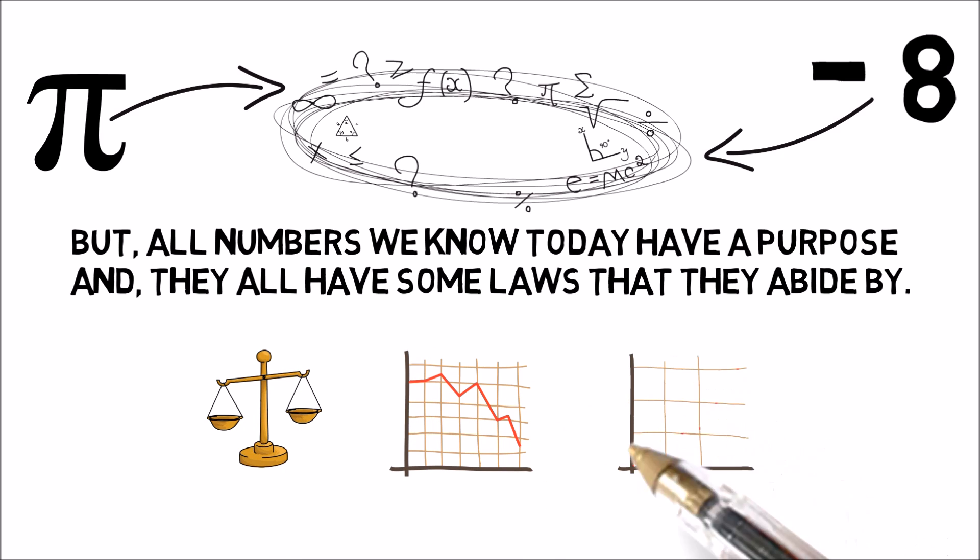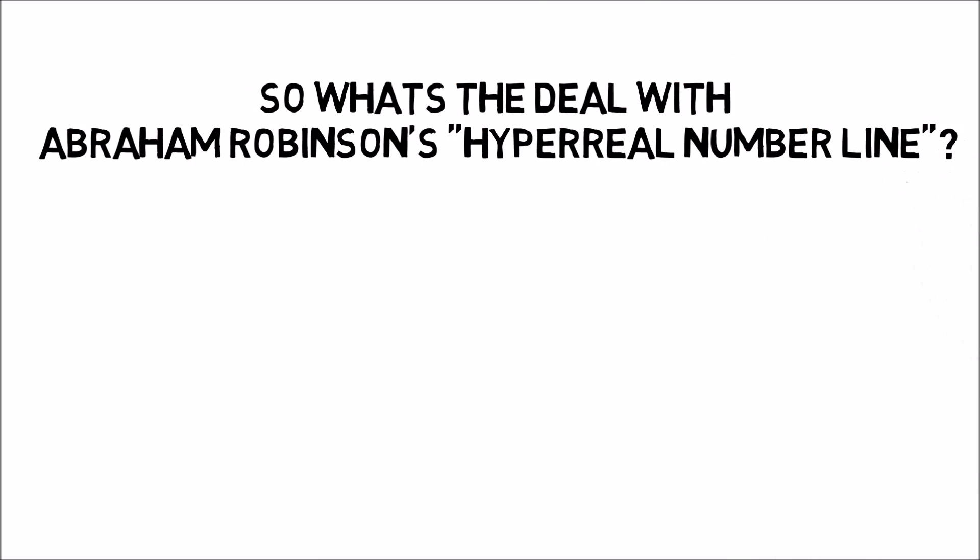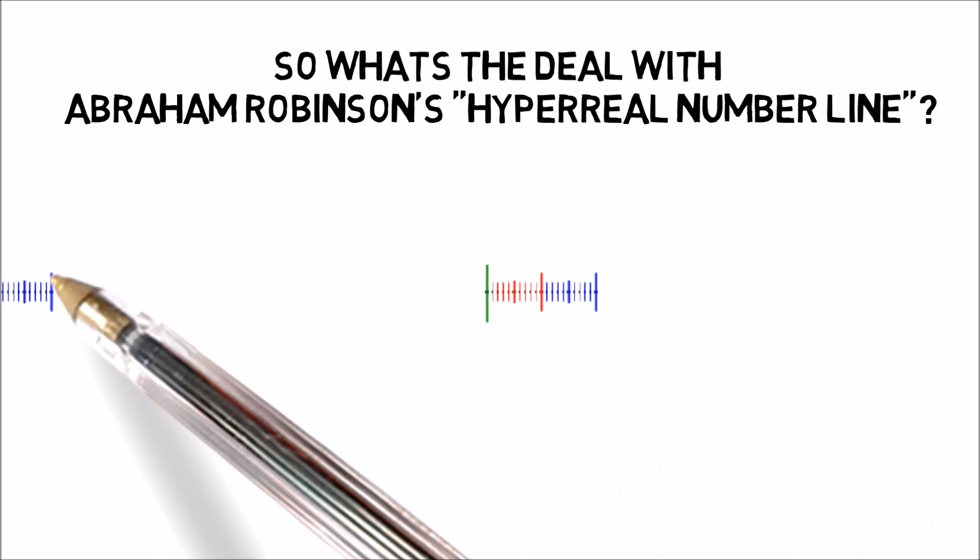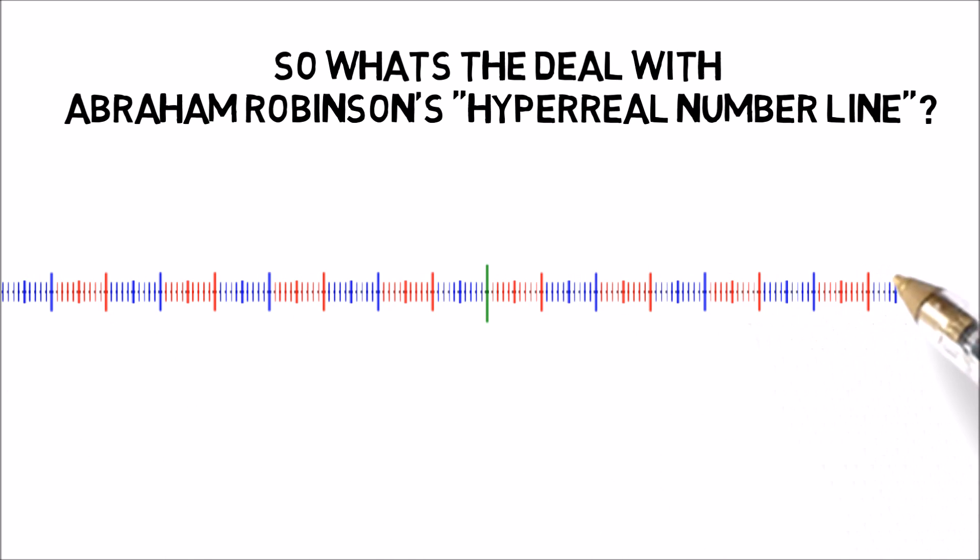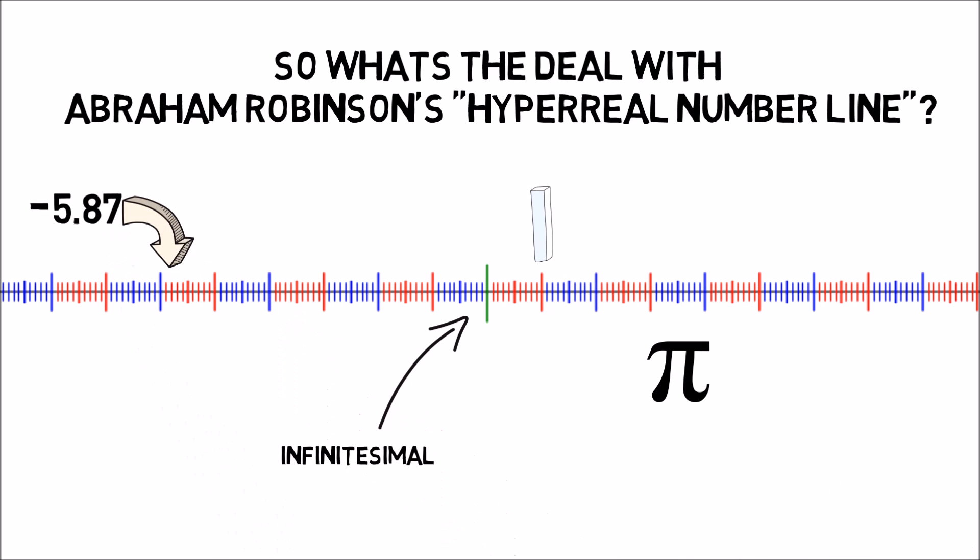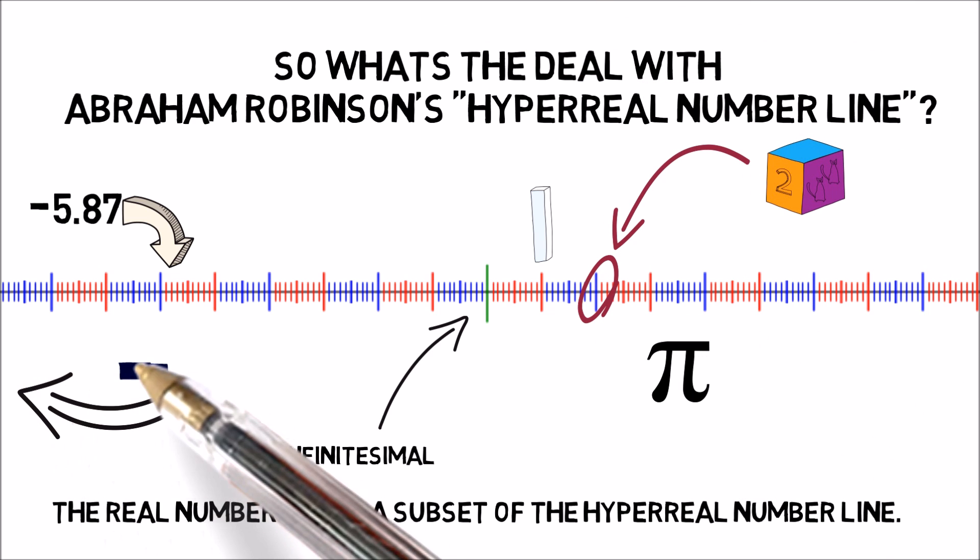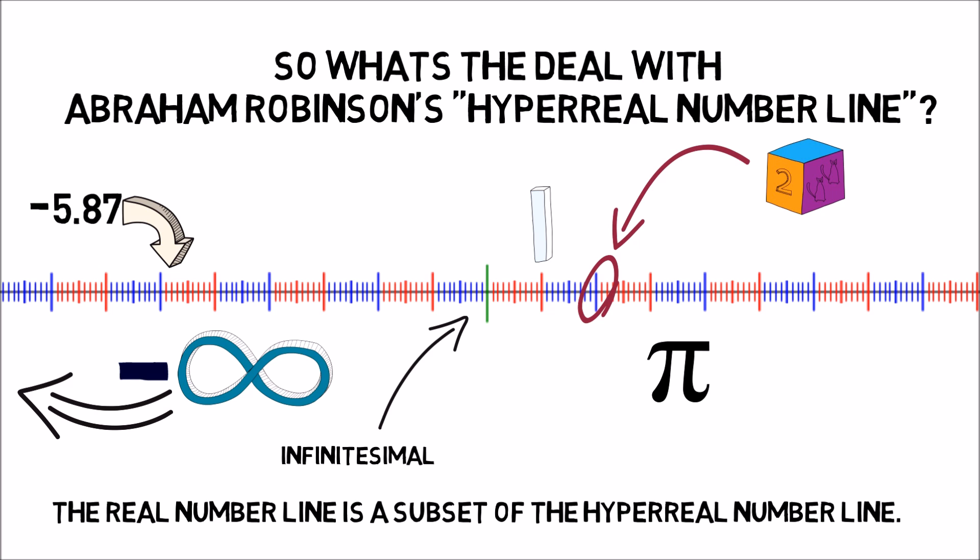Laws that allow us to predict what will happen to the numbers when we alter them. So, what's the deal with Abraham Robinson's hyperreal number line? It's pretty simple. This new number line has these infinitesimals in it, along with every real number. The real number line is a subset of the hyperreal number line. Meaning that all the real numbers, such as 1, 2, 7 billion, and pi, all these numbers are inside of the hyperreal number line.